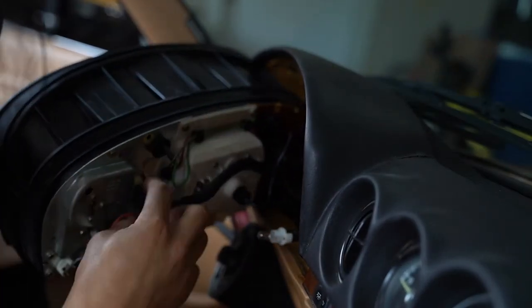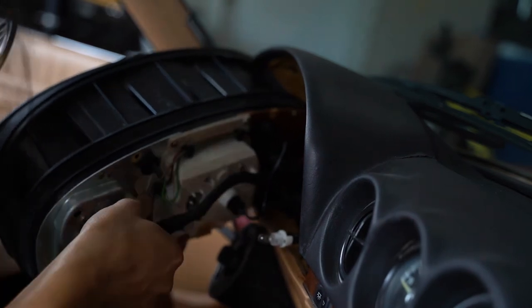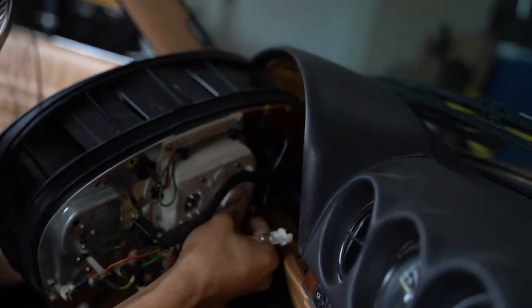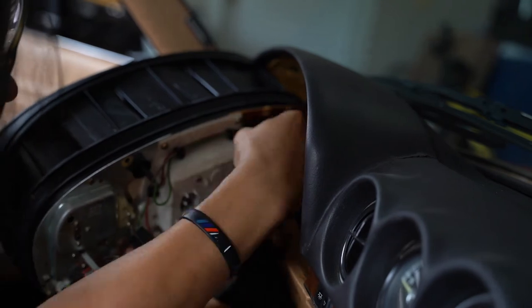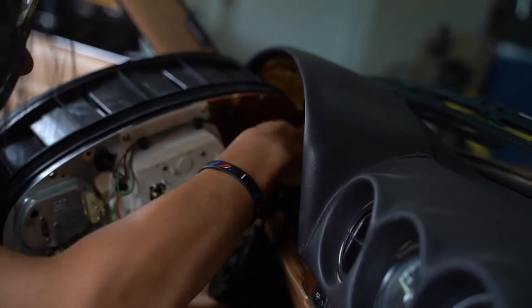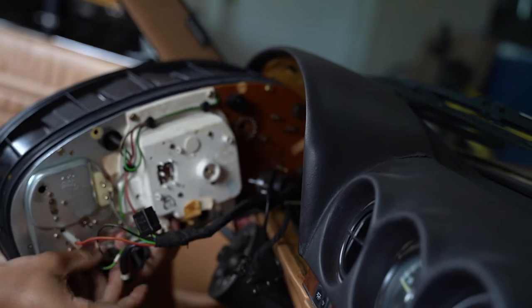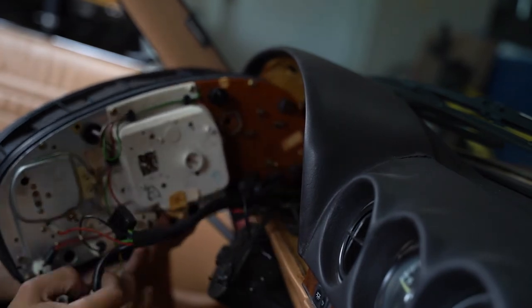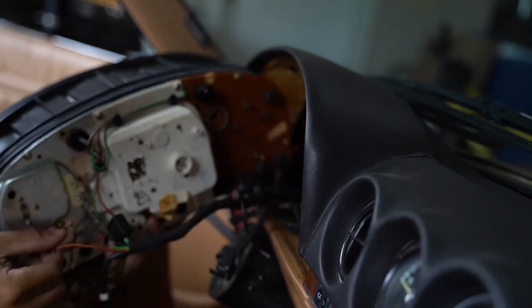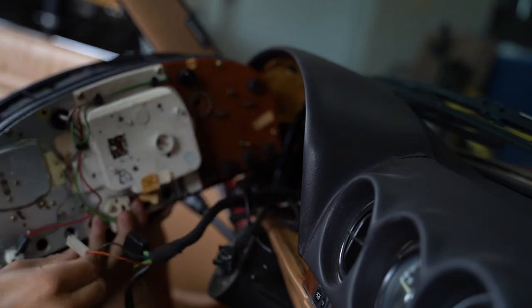Next, I start unplugging and removing every connector on the back of the gauge cluster, taking note of what each connector is and where it goes. But, being especially careful with the economy meter tube. It is made out of old 80s rubber and operates on a vacuum-based system, so it's really important that I don't mess that up.